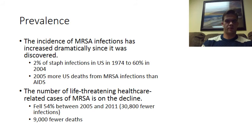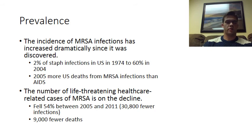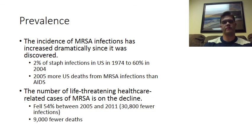These strains are actually pretty prevalent. Since the discovery of MRSA back in the 1960s, the incidence of infections in the United States has increased dramatically — from 2% of all staph infections in the U.S. in 1974 being MRSA-related, to 60% in 2004 being MRSA-related. In 2005, more deaths in the United States were caused by MRSA than by AIDS. But there is a brighter side: the number of life-threatening healthcare-related cases — such as those in surgery patients and immunocompromised patients — is actually on the decline, falling 54% between 2005 and 2011, with 9,000 fewer deaths in the United States due to those types of cases.